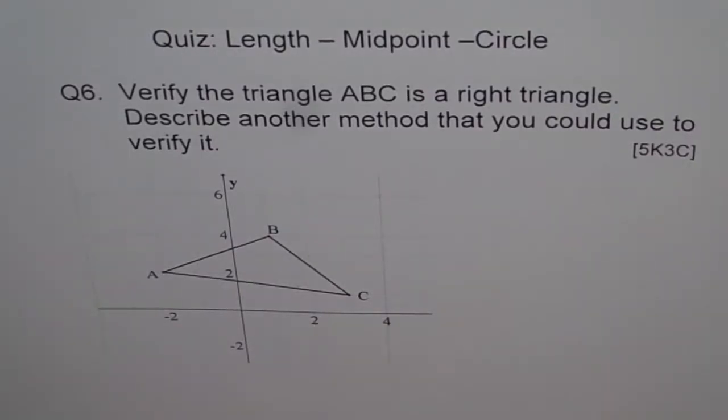Question number six. Verify the triangle ABC is a right triangle. Describe another method that you could use to verify it.